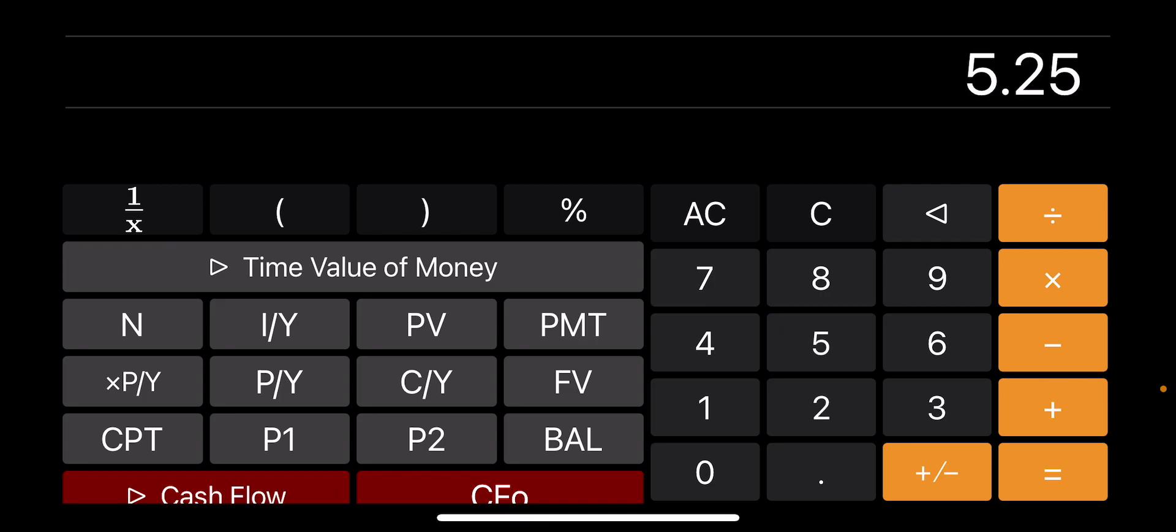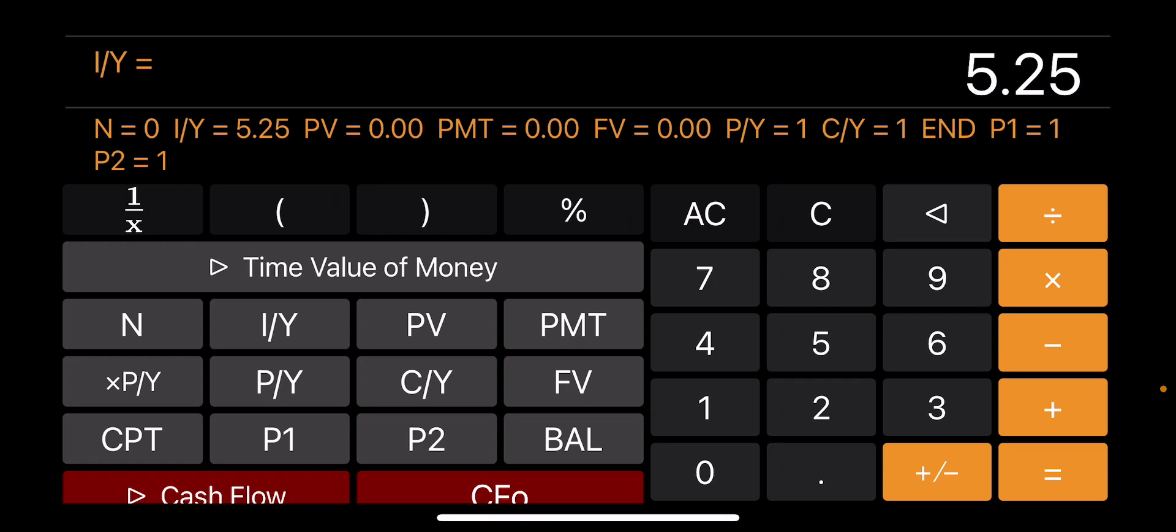So for example, if the interest rate is 5.25, I just type 5.25 and press I/Y, which means interest per year, interest rates per year. So the other button, if I go from basically top left to bottom right, N, which is the number of payments.